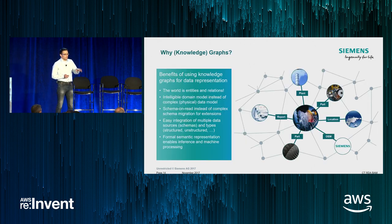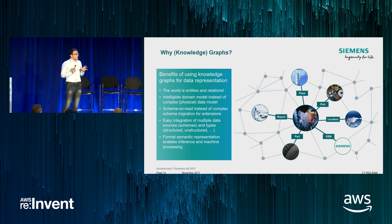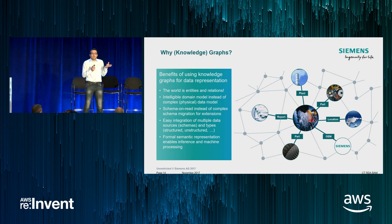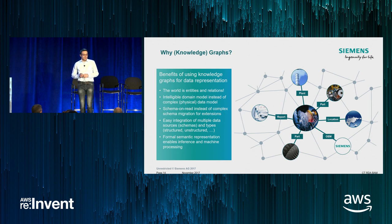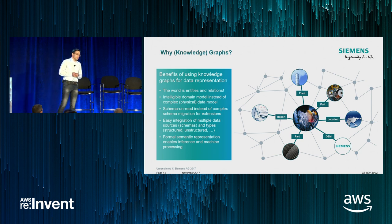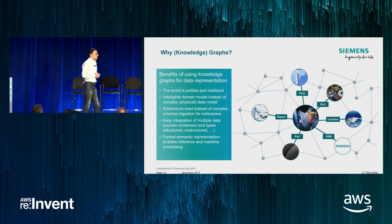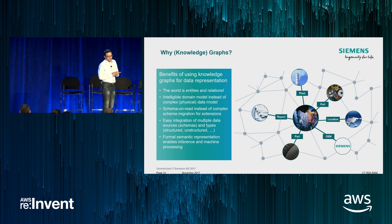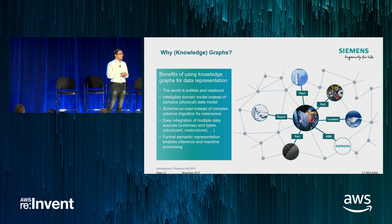Why knowledge graphs? We think the world is entities and relations. We want an intelligible domain model that the domain user understands, not just a DBA. We don't like a fixed schema built for one purpose that may not serve another access pattern — we like schema on read. The RDF approach works well for integrating data sources. Our background in ontologies and reasoning gives us use cases where formal semantics help us draw conclusions and put machine learning on top of the knowledge graph.